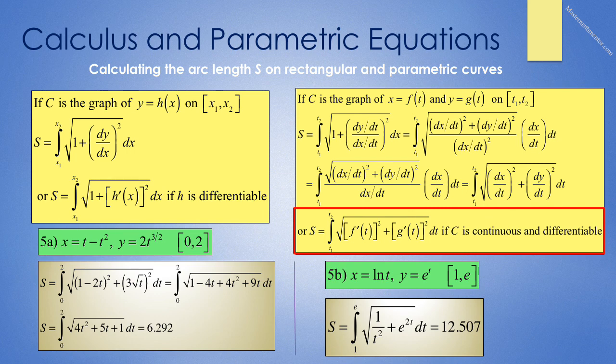In example 5b, we find the arc length of x equals ln(t), y equals e^t on the interval t equals 1 to e. The arc length is the integral from 1 to e of sqrt((1/t)² plus (e^t)²) dt, which equals sqrt(1/t² plus e^(2t)) dt, and that turns out to be 12.507.